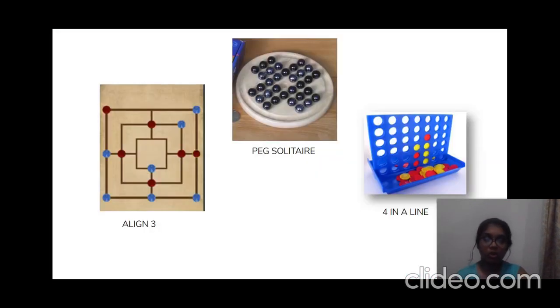There were three games in my mind: Align 3, Peg Solitaire, and Four in a Line. Peg Solitaire and Four in a Line are both games I have at home and play with. They are both amazing and fun. Align 3 was a game which my grandfather told me about, but when I discussed it with the instructor, it was difficult to code, so this was rejected.